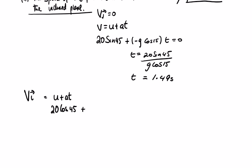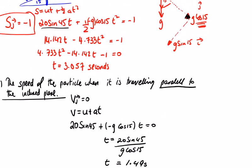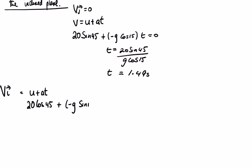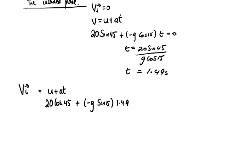...we're going to say the acceleration was minus G sin 15 going down this way in the I direction, times T which is 1.49. We just type this into our calculators, and it's going to give me the speed in the I direction which is 10.36 meters per second.